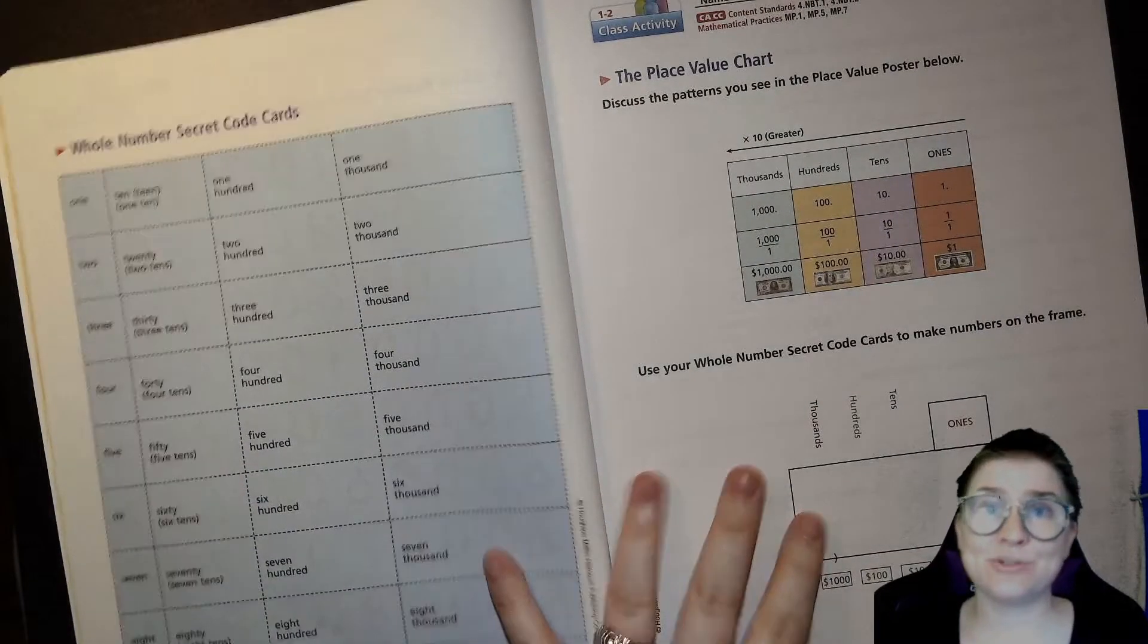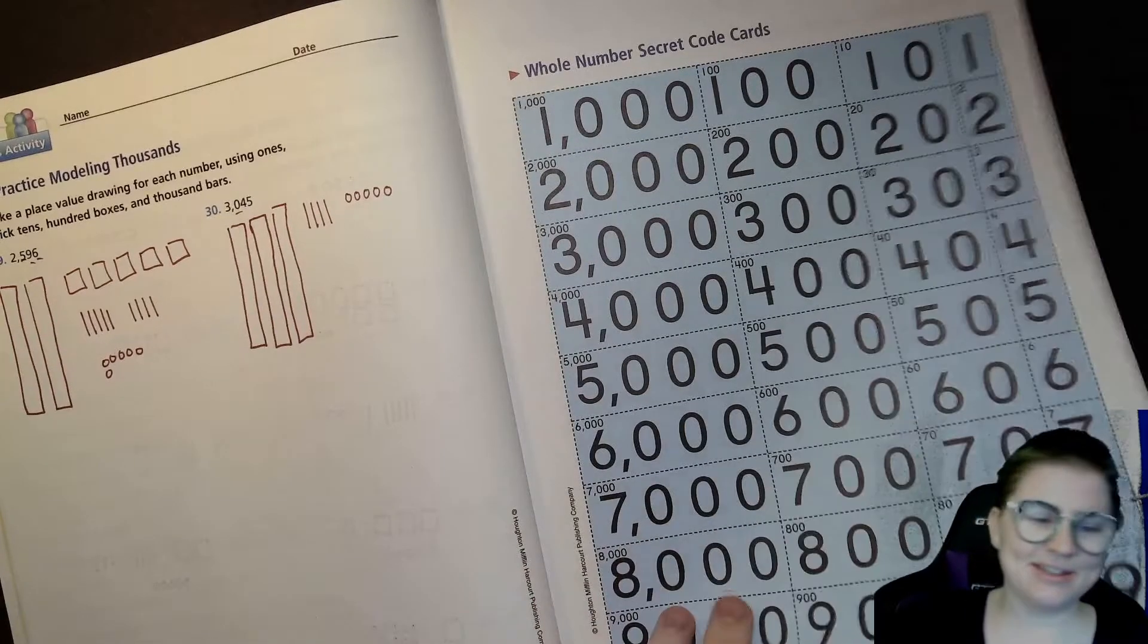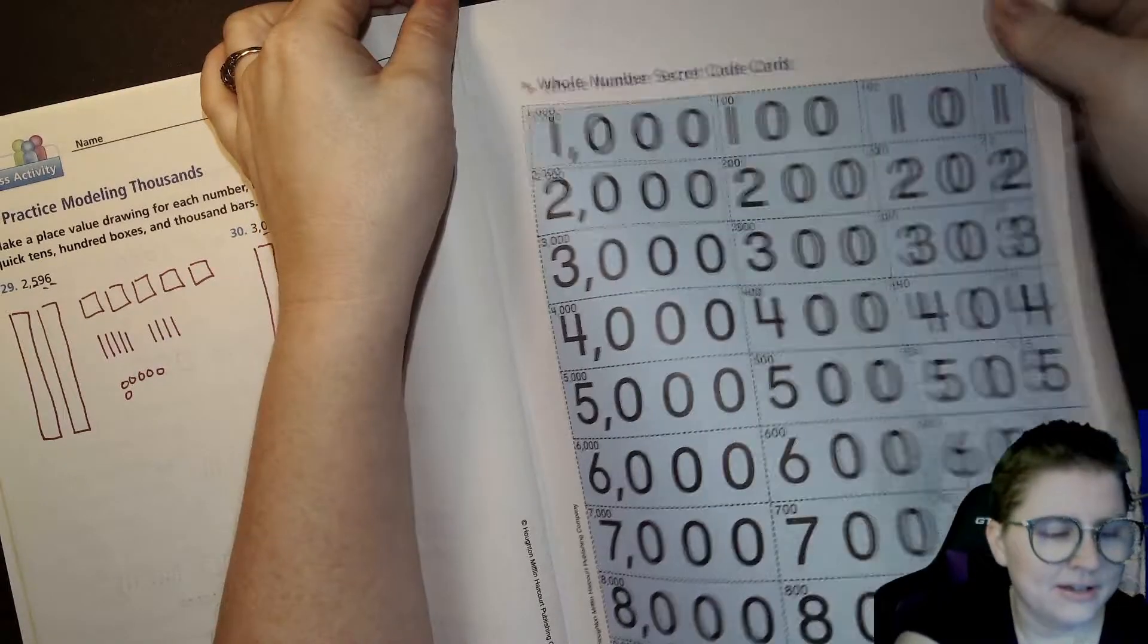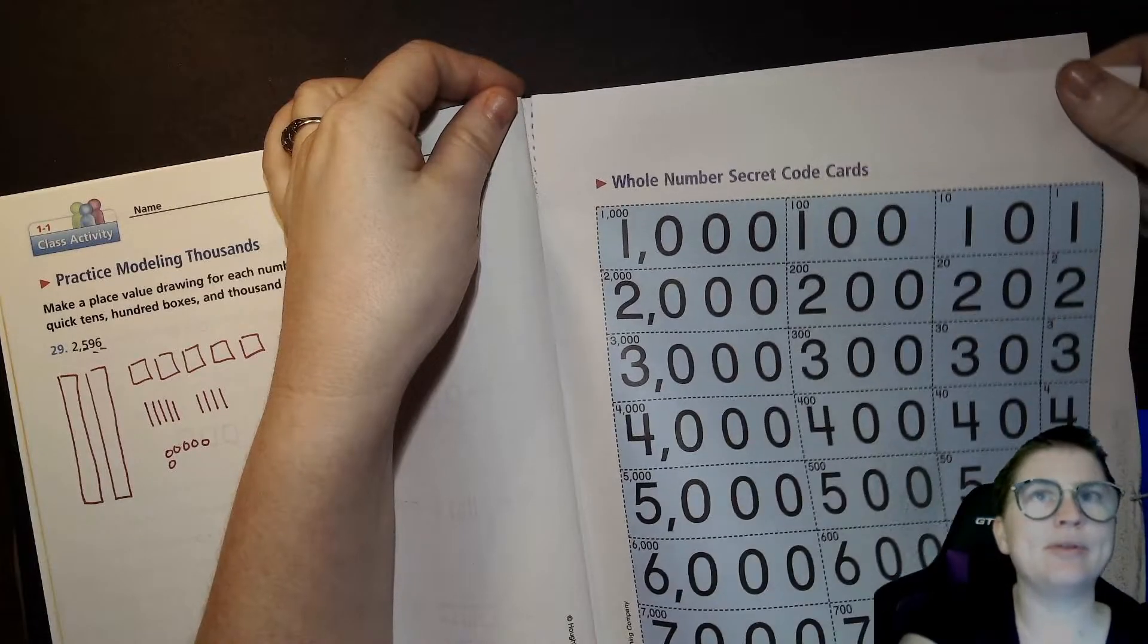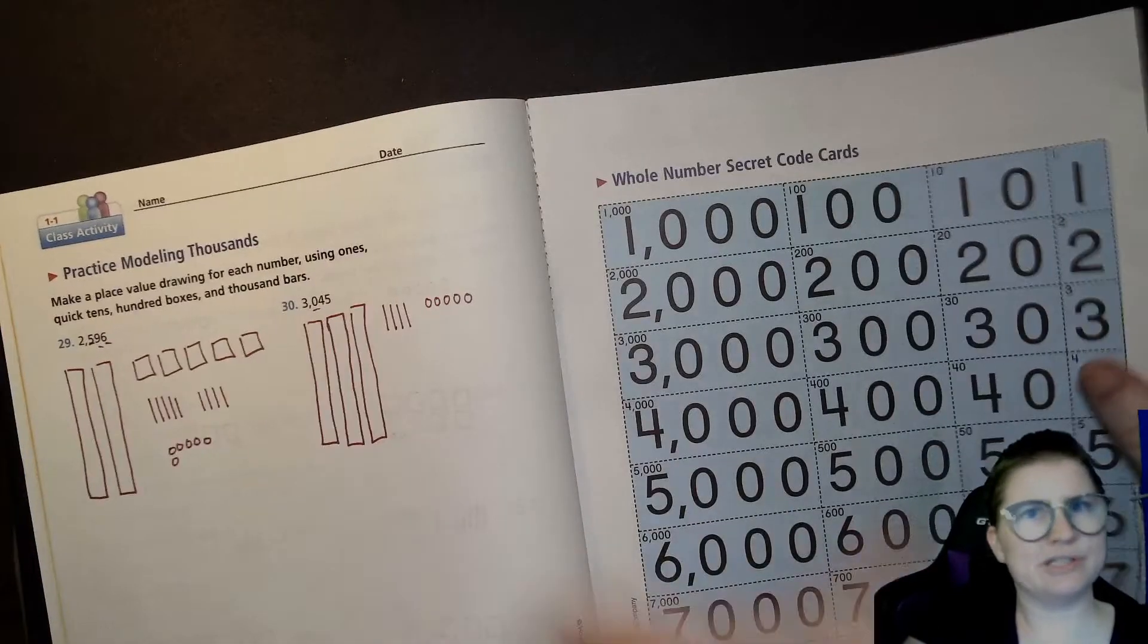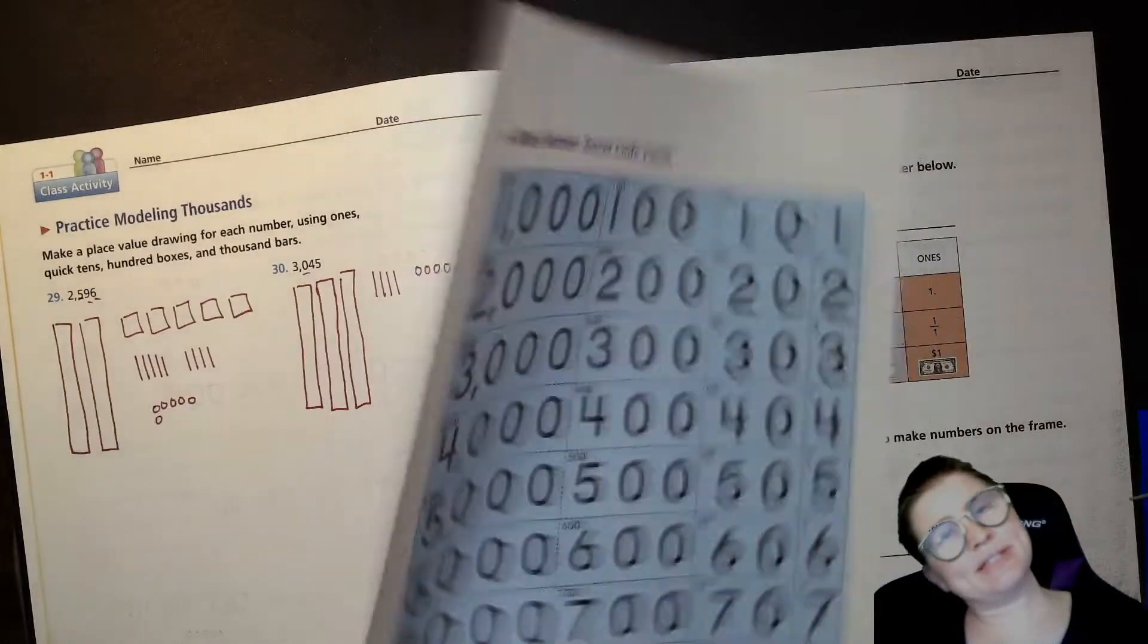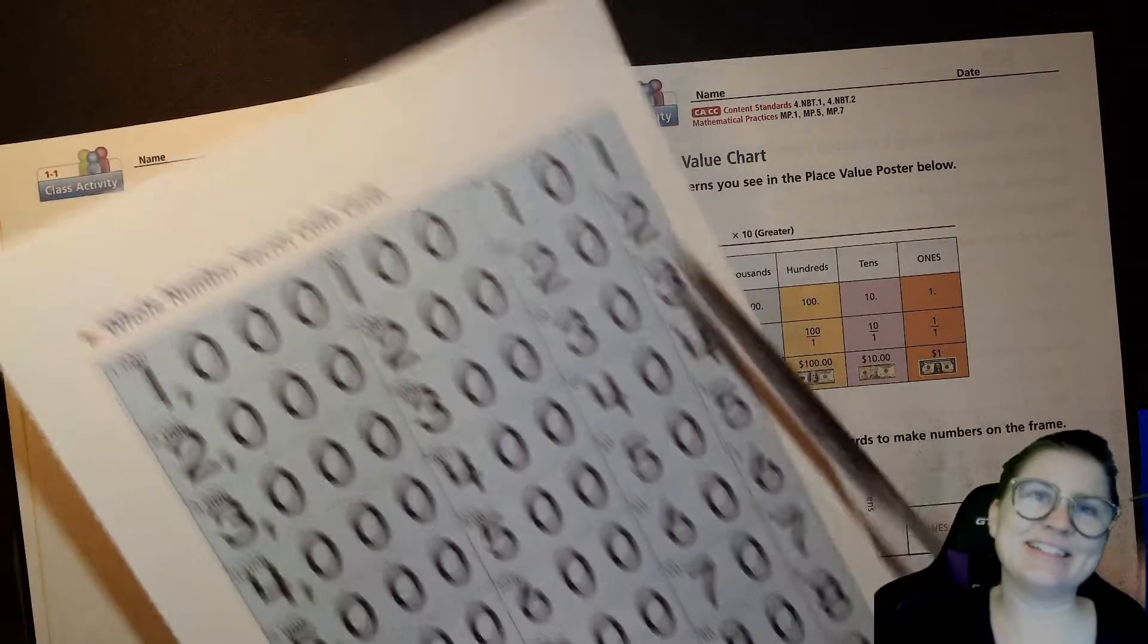Alright, let's get started. So the first thing that we're gonna do: we're gonna carefully rip out this page. When I'm ripping pages out of here, I'm holding this book securely, pulling with my hand kind of at an angle, being gentle. I don't want to rip down the middle. If you do, you just tape it together, it's not a big deal, but I'm trying to be careful. Then you're going to carefully take some scissors and you're going to cut along these dashed lines.